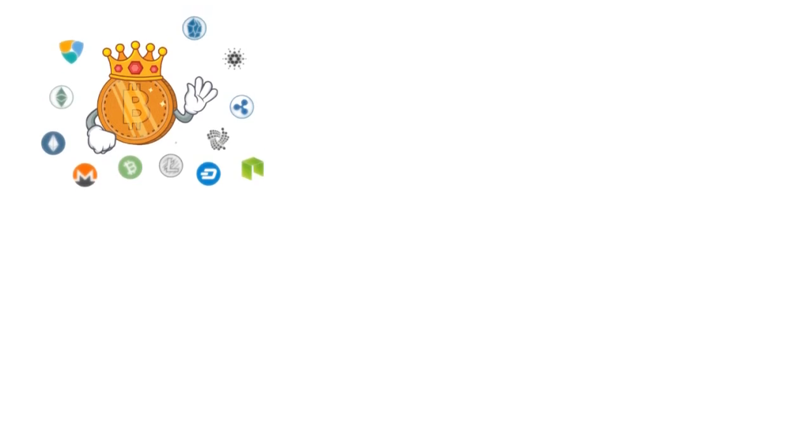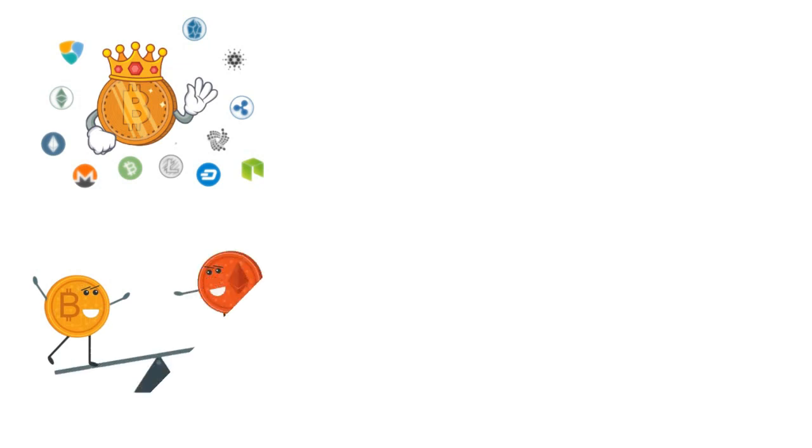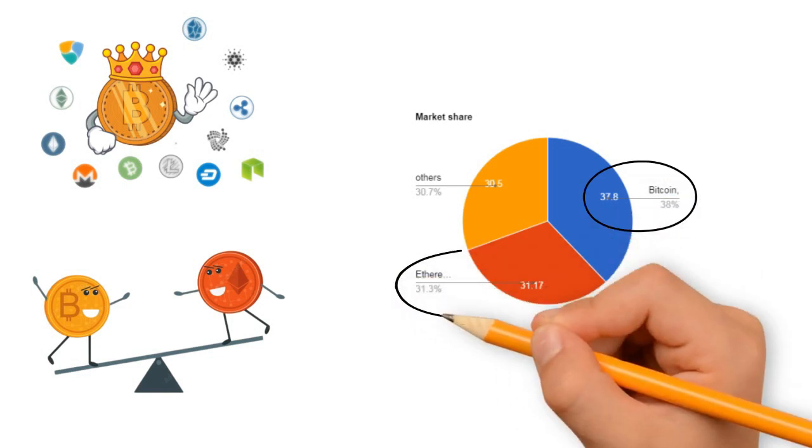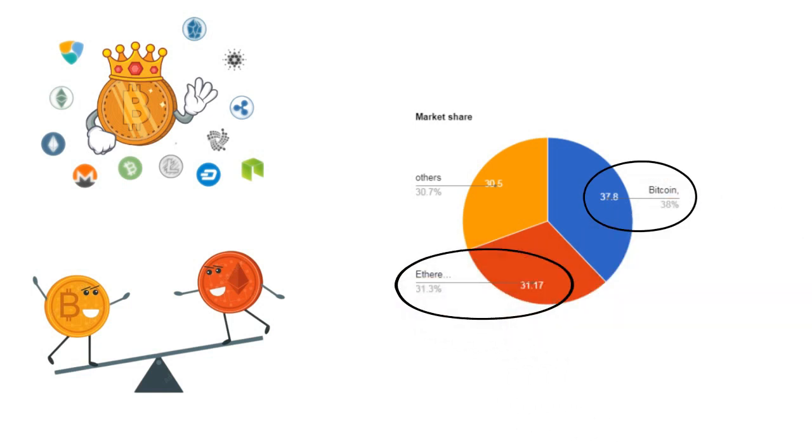Regardless of any changes in the altcoins, the pioneer Bitcoin remained always in the lead, dominating the crypto market. In 2017, Ethereum tried causing the flipping effect to overthrow Bitcoin and take the lead. However, in the same year, BTC held 37.8% of the total market share, while Ethereum remained at 31.17%.